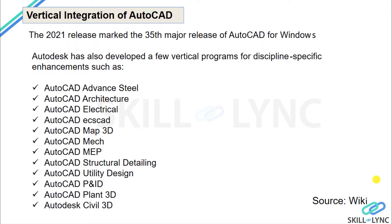These include AutoCAD Advanced Steel, which is a major game-changer in BIM for steel detailing; AutoCAD Architecture, formerly known as Architecture Desktop; AutoCAD Electrical for electrical system design; ECSCAD for electronics; AutoCAD Map 3D for GIS (Geographic Information System); and AutoCAD Mechanical, which evolved from Mechanical Desktop and supports part modeling, assemblies, and more.